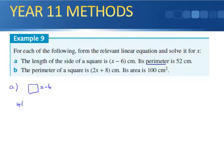Perimeter - I add up all the sides. So there's 4 of them. I have 4 times x minus 6, and that's going to be 52. Dividing by 4, I get x minus 6 equals 13. So x equals 19.